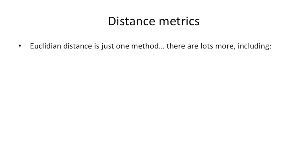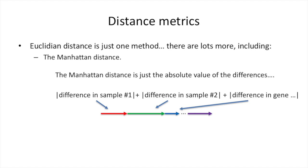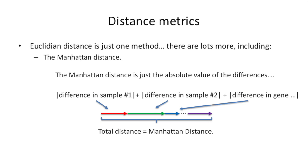The Euclidean distance is just one method — there are lots more, including the Manhattan distance. The Manhattan distance is just the absolute value of the differences. So instead of squaring the differences and then taking the square root, all we do is take the absolute value of the differences. We can think of the Manhattan distance geometrically by imagining each difference as a line segment. If we put all those line segments together head to tail and add up their total length, that's the Manhattan distance.